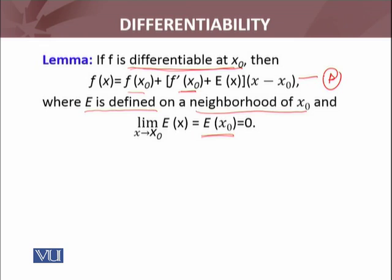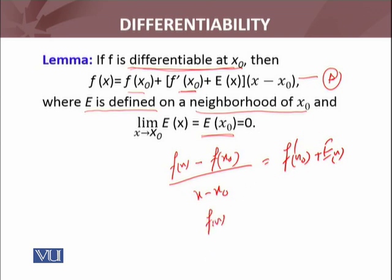So let's construct such a function. From this equation given here, if I take f(x) - f(x₀) divided by (x - x₀), this term it's multiplied by, equals f'(x₀) + E(x). I can write it this way. Now [f(x) - f(x₀)]/(x - x₀) - f'(x₀) = E(x). Now I'll see whether this E(x) satisfies the given conditions in the lemma or not.